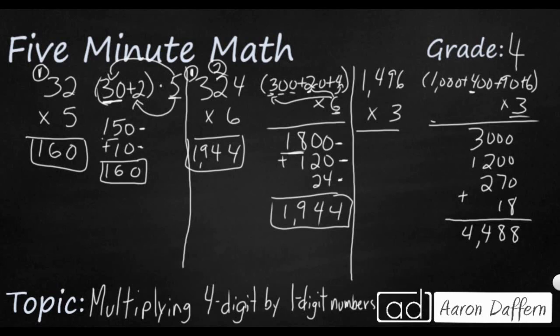Let's jump straight to the standard algorithm. 6 times 3 is 18. Carry that 1. 9 times 3 is 27. Bring that 1 back in. It's 28. 4 times 3 is 12. Bring the 2 back in. It's 14. And then 1 times 3 is 3. Bring that 1 back in. It's 4. So we get the same thing. 4,488.